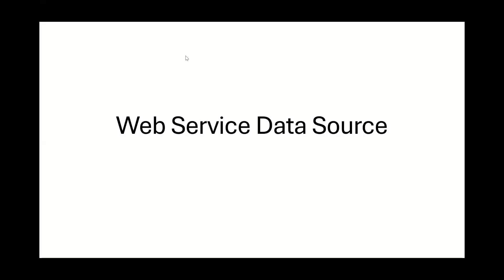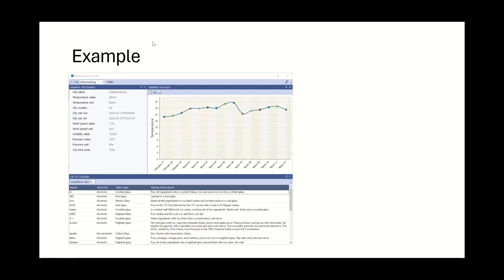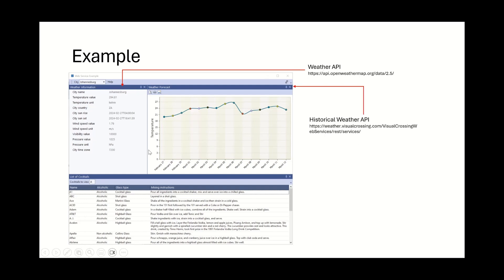In this section we're going to be discussing web service data sources. The sample we're building will pick up current weather conditions for a city we enter, get some trend temperatures, and also get some information about cocktails. To do that we'll be using three different web services: one to populate a form, another to populate a chart, and a third to populate the list view.